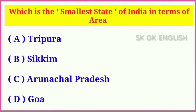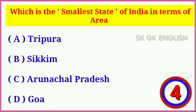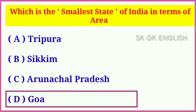Question number eleven: Which is the smallest state of India in terms of area? Options are: A. Tripura, B. Sikkim, C. Arunachal Pradesh, D. Goa. Correct answer is D. Goa.